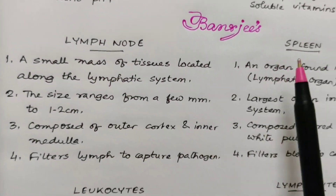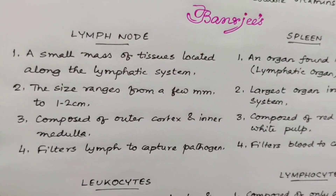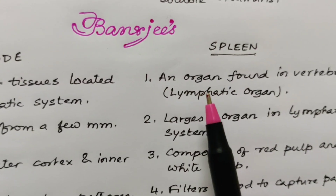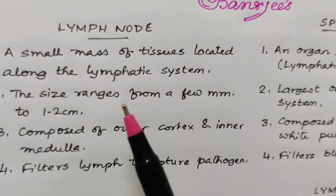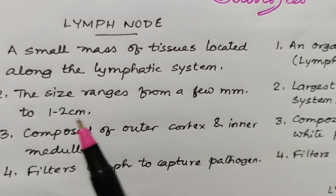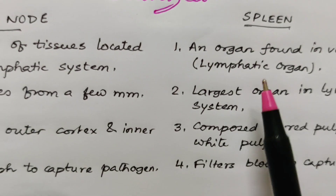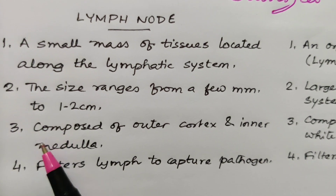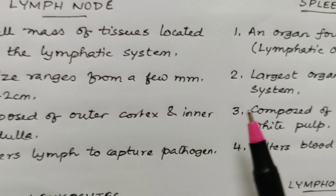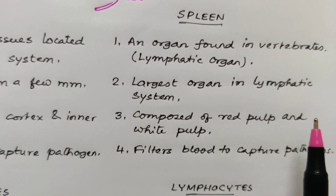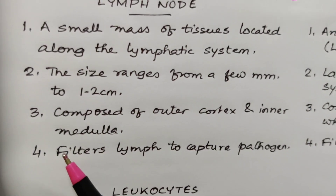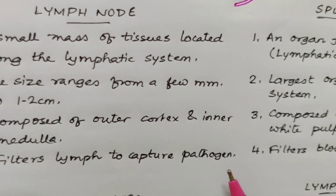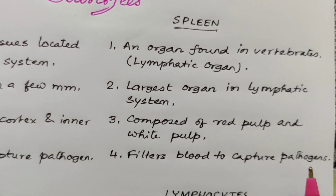Fifth comparison: lymph node and spleen. A lymph node is a small mass of tissue located along the lymphatic system, whereas the spleen is a lymphatic organ found in vertebrates. Lymph node size ranges from a few millimeters to one to two centimeters, and the spleen is the largest organ in the lymphatic system. Lymph node is composed of outer cortex and inner medulla; spleen is composed of red pulp and white pulp. The lymph node filters lymph to capture pathogens, whereas the spleen filters blood to capture pathogens.